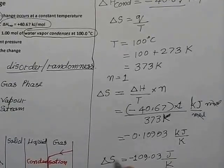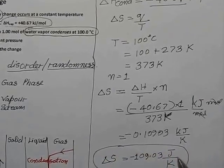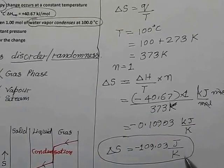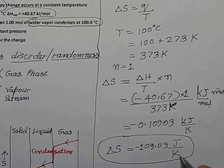We can also write this as -109.03 joule per Kelvin. So change in entropy will be equal to -109.03 J/K.